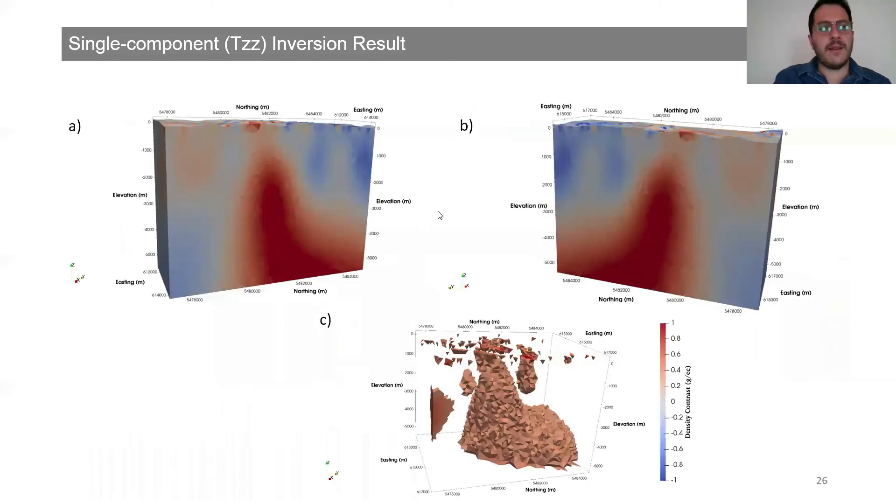Here we are looking at the recovered model of inversion result of Tzz component. Figure A and B show the cross-section views of the recovered model. Figure C shows the threshold view of the recovered model. For clarity, we removed the cells below 0.2 grams per cubic centimeter. As it is thought and expected to be, the deep, dense, centrally located anomaly structure corresponds to the Budgell Harbour gabbro intrusion.